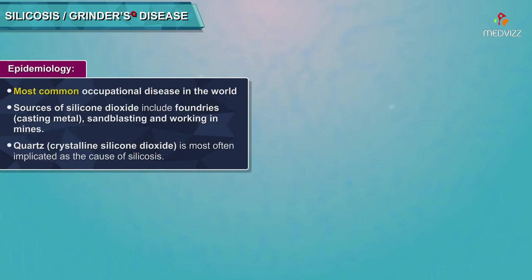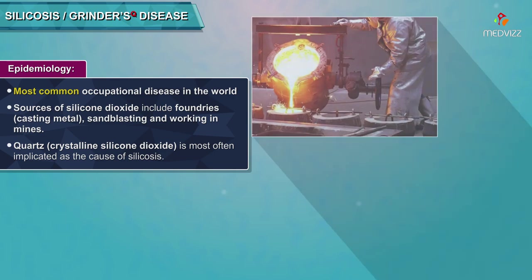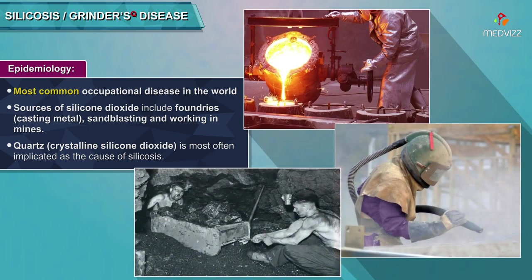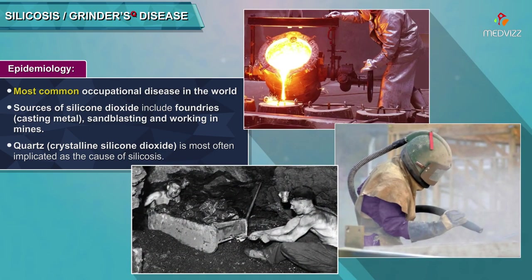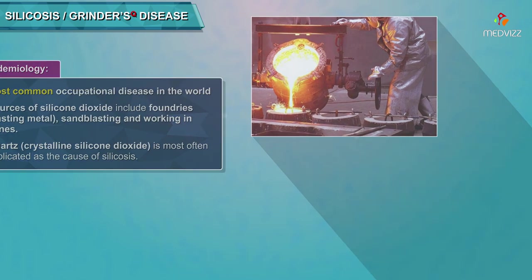Epidemiology: Silicosis is the most common occupational disease in the world. Sources of silicon dioxide exposure include foundries, casting metal, sandblasting, and working in mines. Quartz, or crystalline silicon dioxide, is most often implicated as the cause of silicosis.